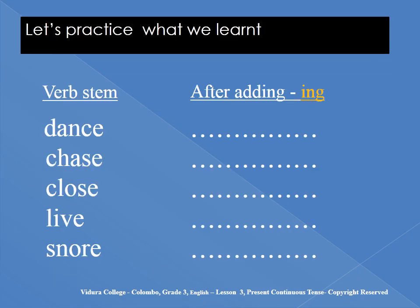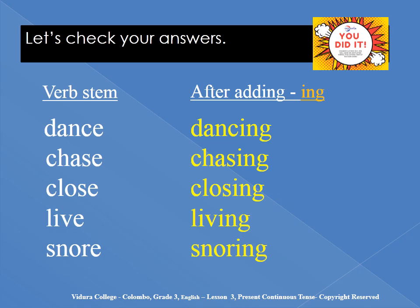All right, let's practice what we learned. I have given the verb stems — make the words by adding -ing, but remember to drop 'e': dance, chase, close, live, stone. Let's check your answers: dance → dancing, chase → chasing, close → closing, live → living, stone → snoring. You did it — very good.